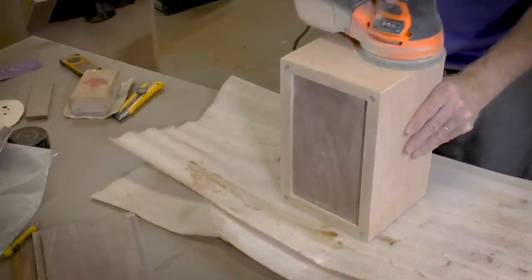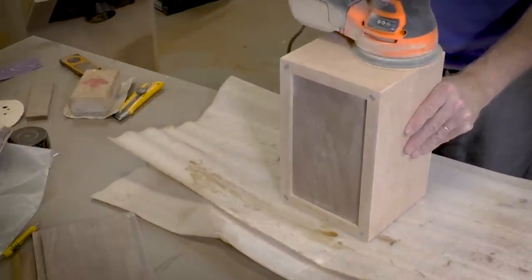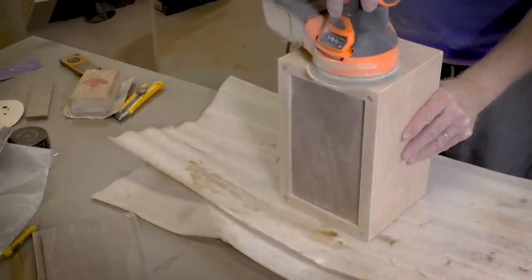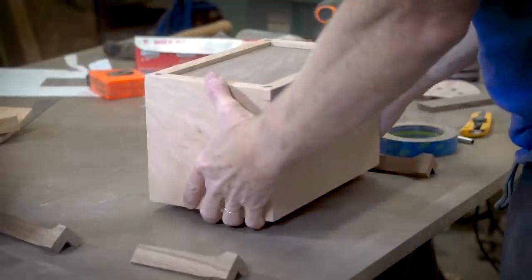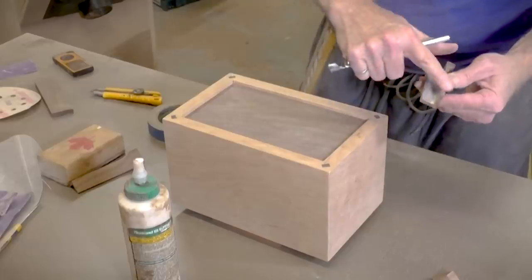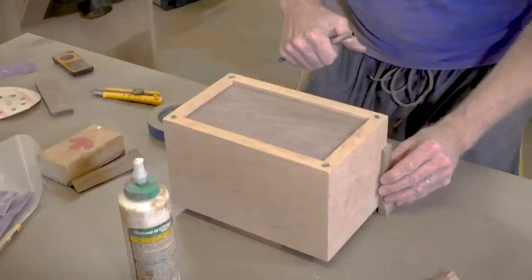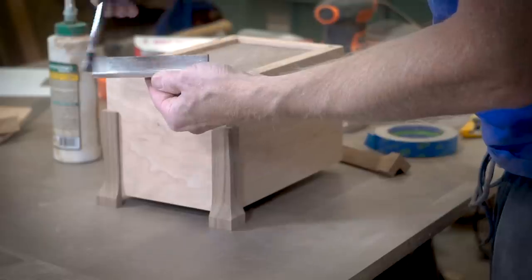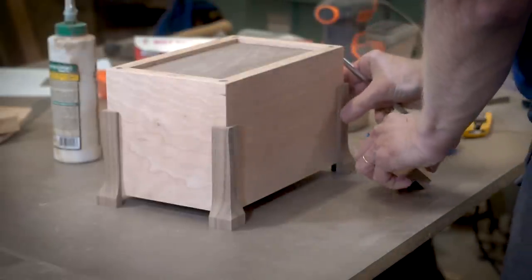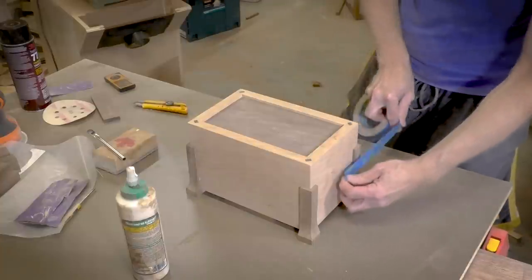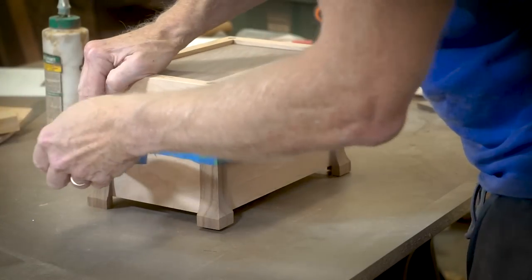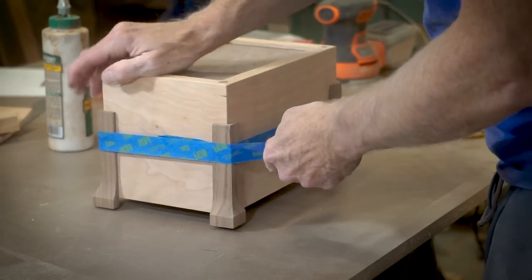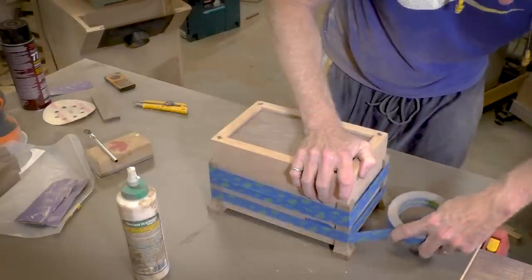Now I'm sanding the outside of the box before attaching the legs. To make sure the legs are all attached at the proper length, I'm setting the box up on a couple of blocks of wood on a flat surface. So now each of the legs is the proper length. I've glued them up and now I'm just taping them to hold them in place.